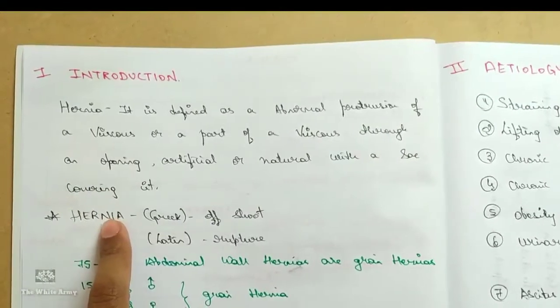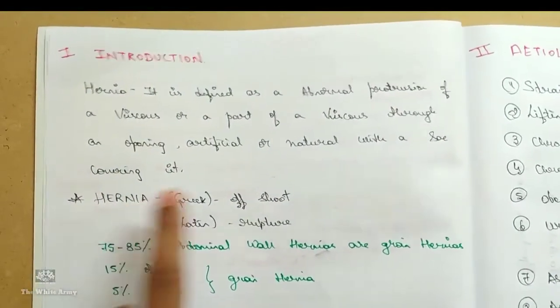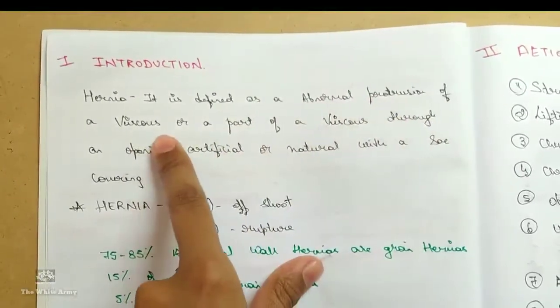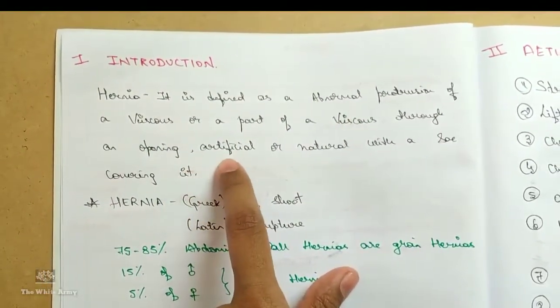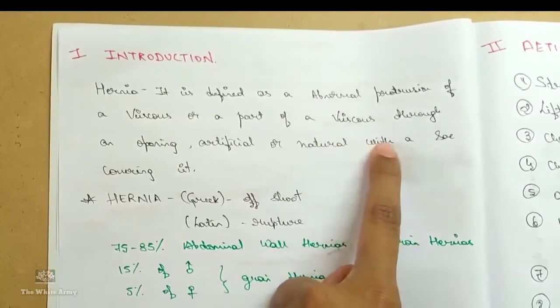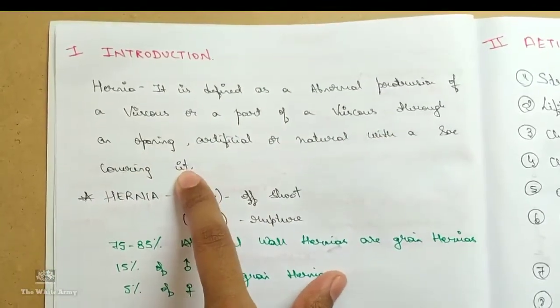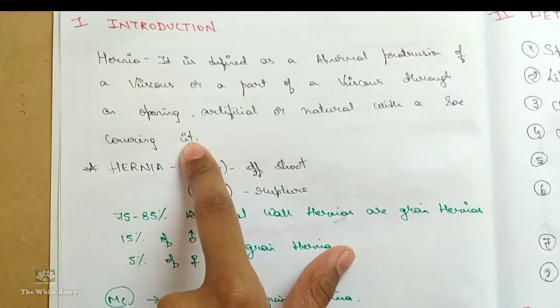Introduction. What is hernia? Hernia is defined as an abnormal protrusion of a viscus or a part of a viscus through an opening that can be an artificial one or a natural one with a sac covering it. However, there are many hernias without any sac.